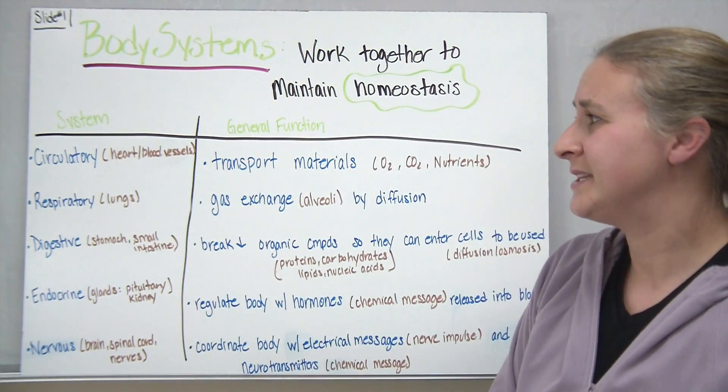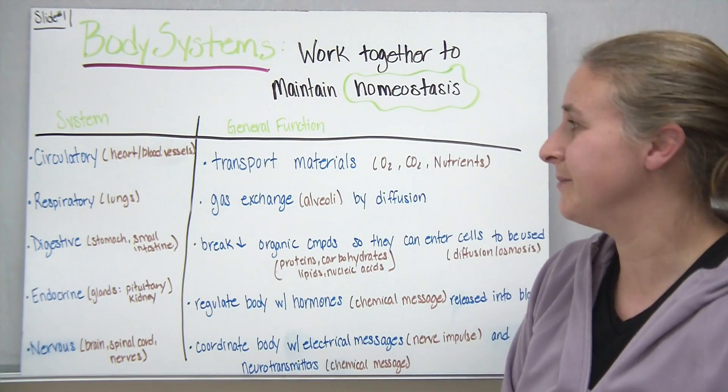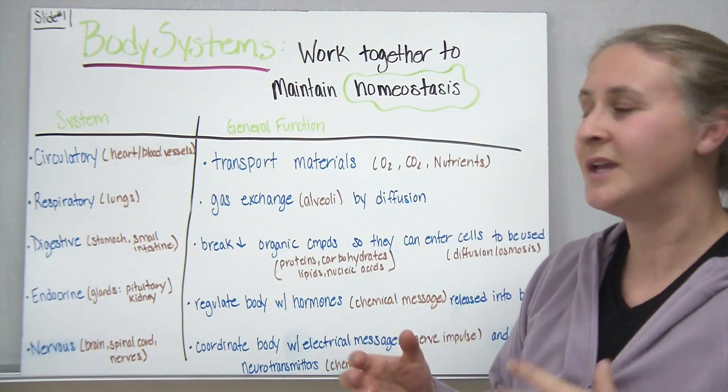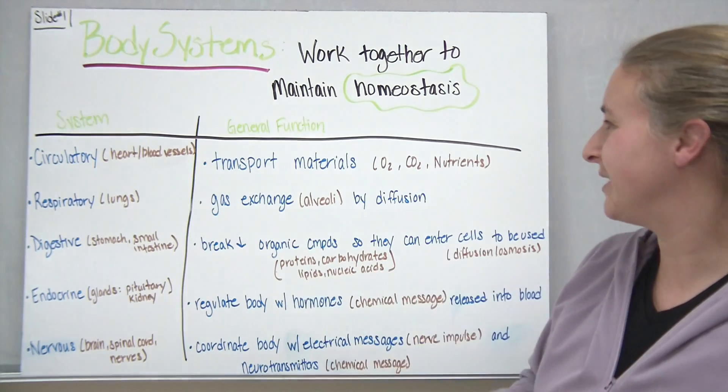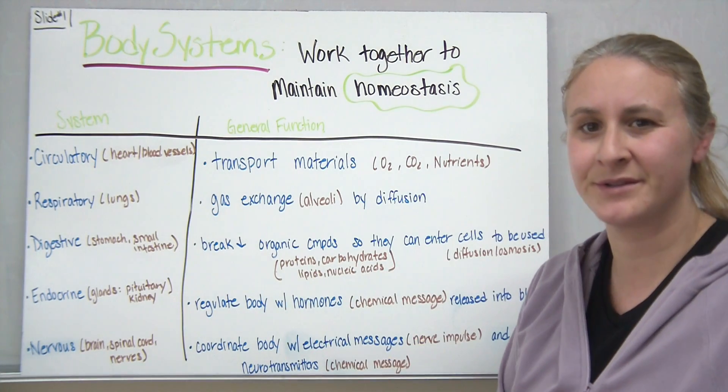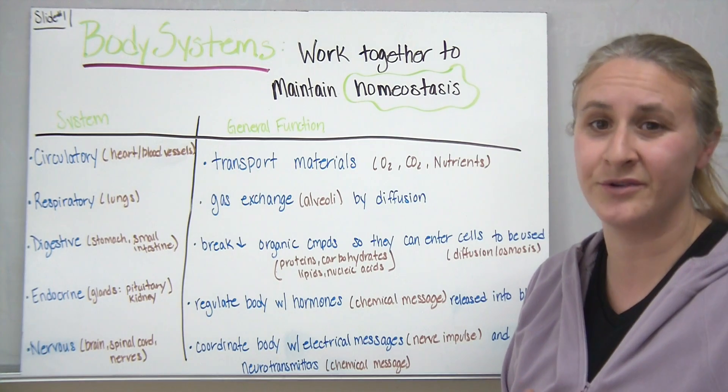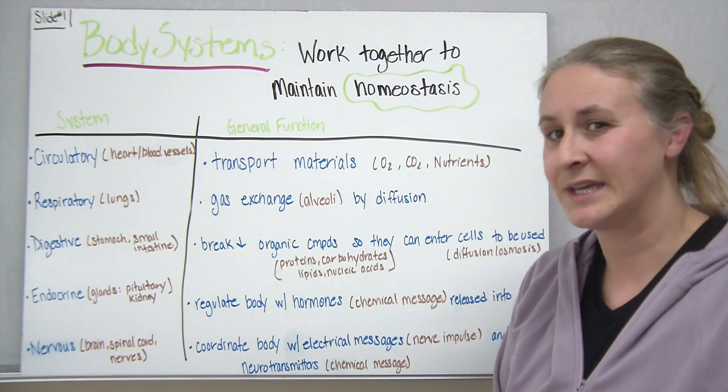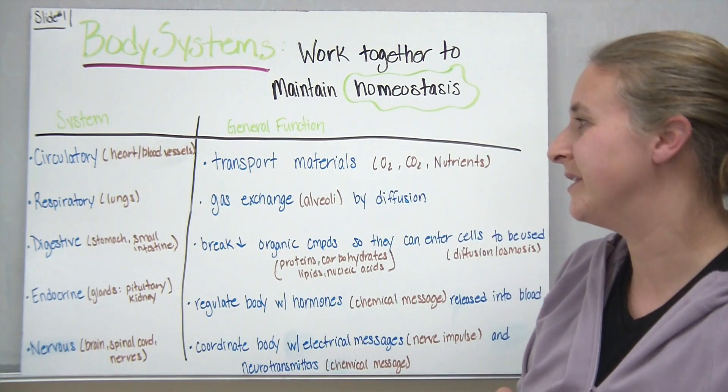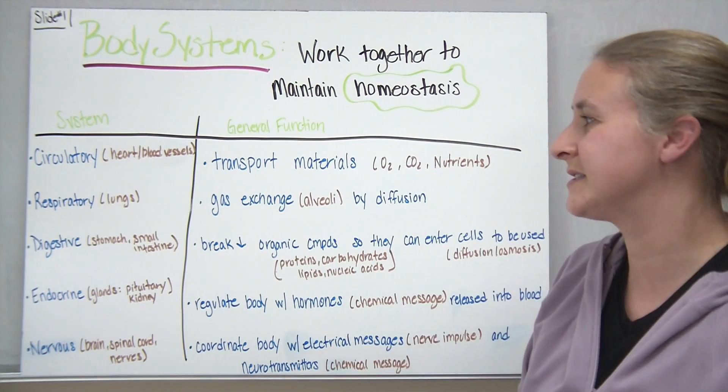Let's look at a couple of the systems. Take for example the circulatory system that includes your heart and blood vessels primarily. It's used to transport materials and many of the materials that we tend to think about are oxygen, carbon dioxide, and other nutrients. There are other nutrients like enzymes and things like that in your blood that get transported around to use for life functions.